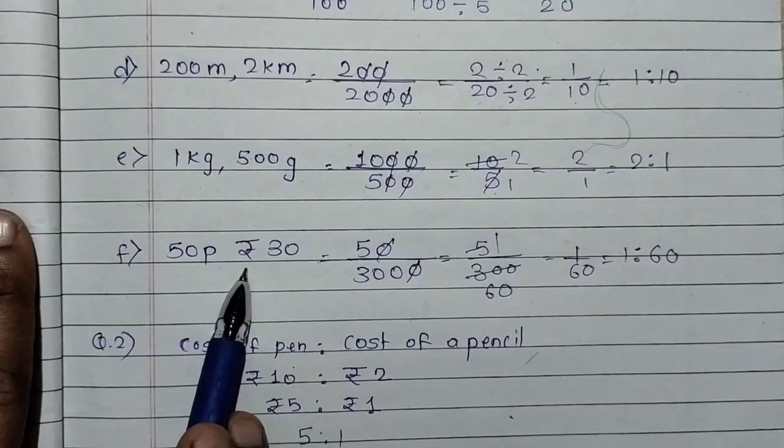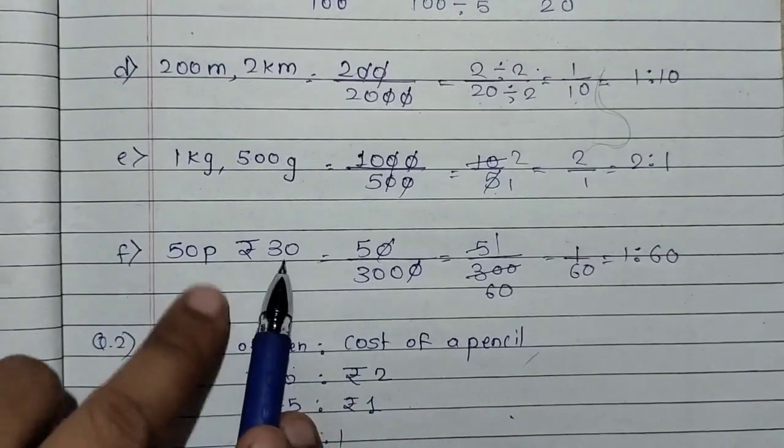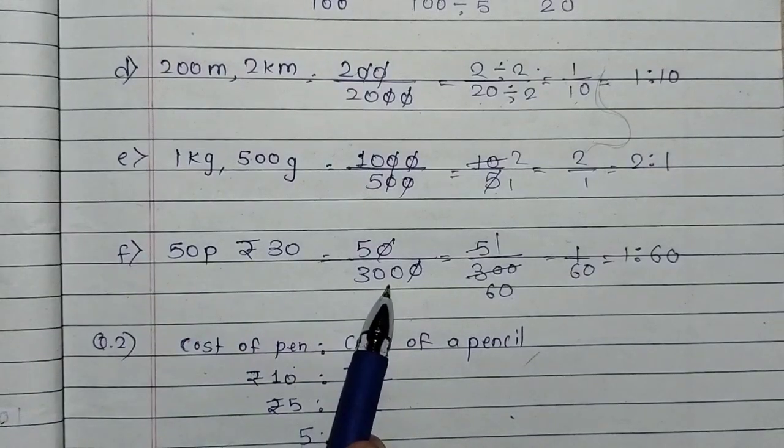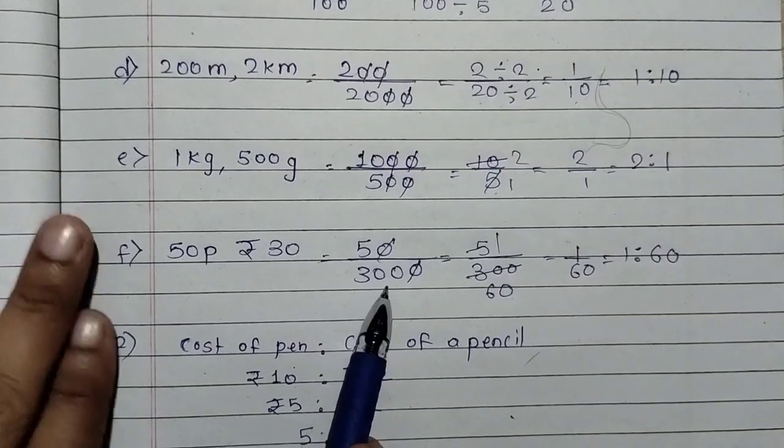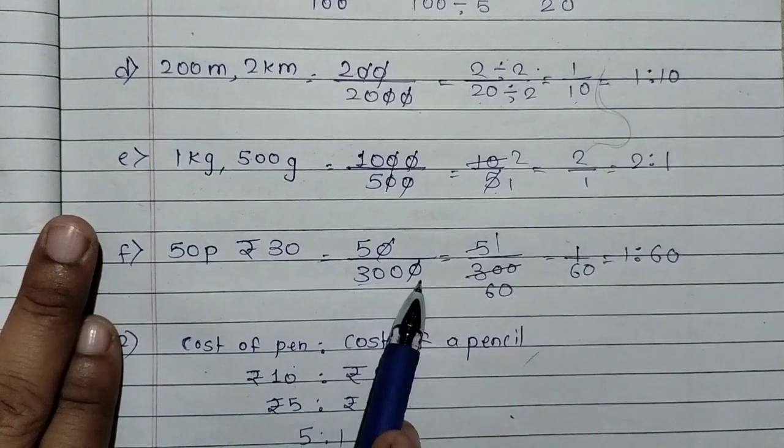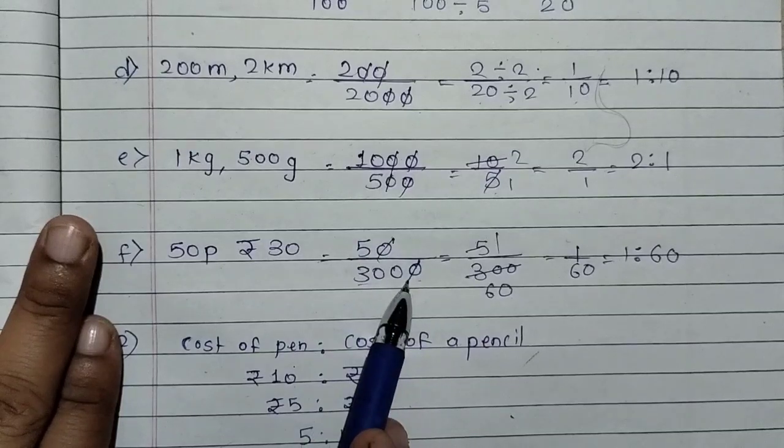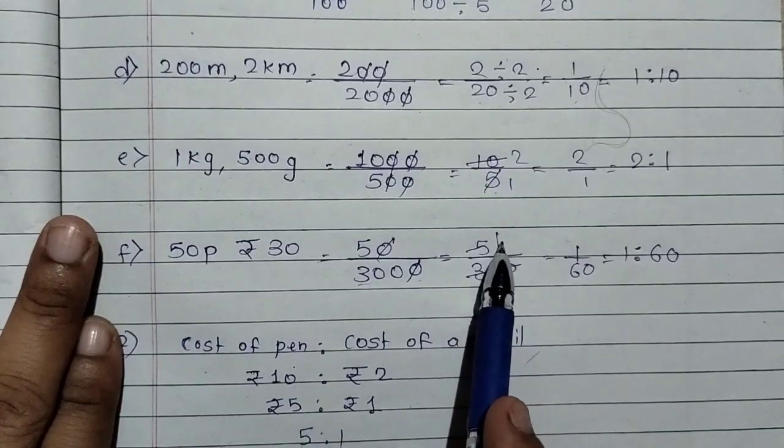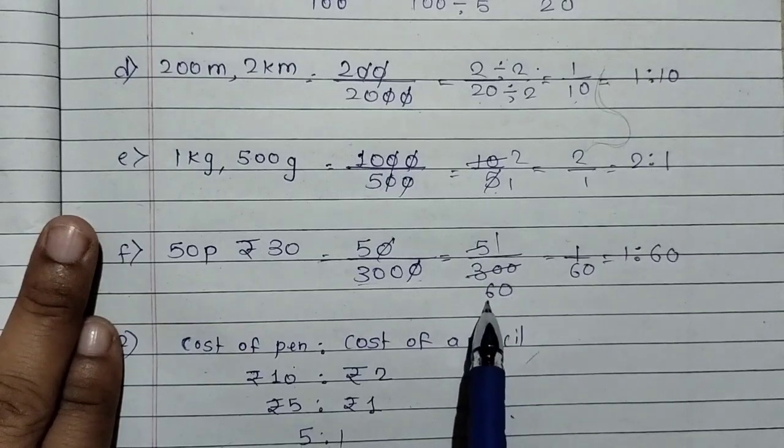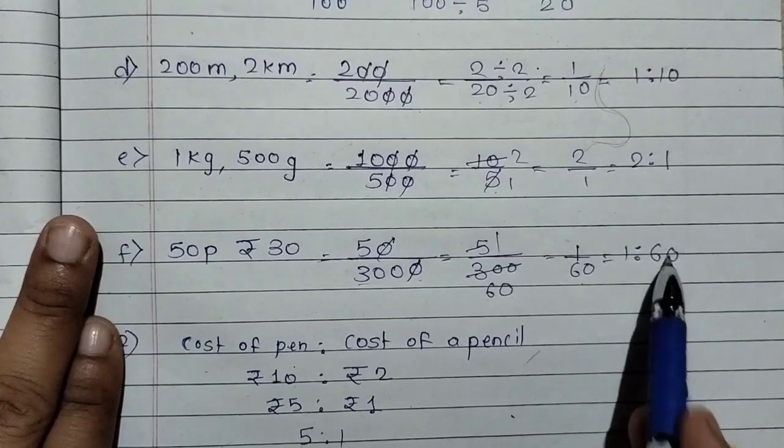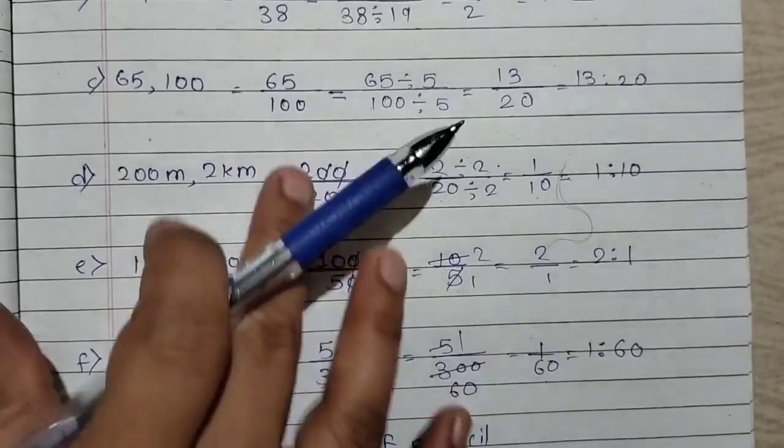If we have paisa and rupees, so 50 paisa is as it is. And rupees 30 will be converted. 1 rupees equals 100 paisa. So 30 rupees times 100 equals 3,000 paisa. So here we will cancel zeros. If we get 50 upon 300, you will divide by 5 from the table. So you will get 1 upon 60, meaning 1 is to 60. So it is very easy.